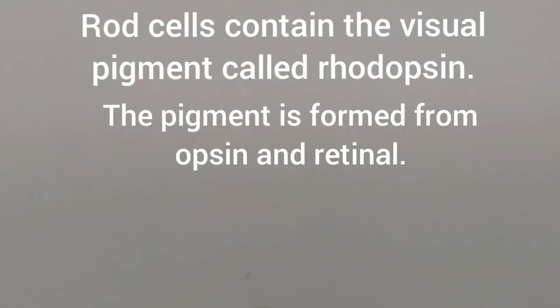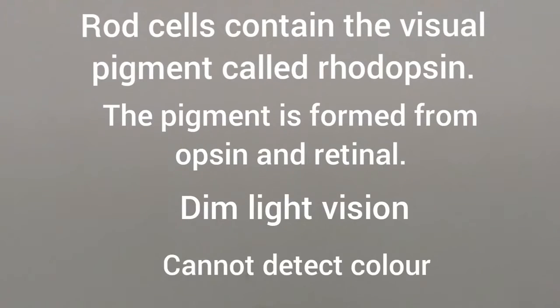Rod cells are activated in dim light. That's why we are able to see objects in dim light. These cells cannot detect color.